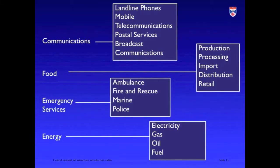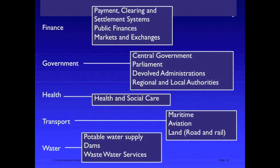Different countries think of critical infrastructure in different ways and use different classifications for their critical infrastructure and for thinking about its protection. In the UK, we use nine different classifications and organise our critical infrastructure around them. The key classifications are: communications, food, emergency services, energy, finance, government, medical services, transport and water.